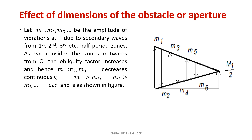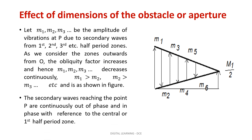Now, let us calculate the amplitude and intensity at point P due to the waves emerging from the half period zones. Let M1, M2, ... Mn be the amplitudes of the disturbances at P due to the first, second, and up to the nth half period zones. The magnitudes M1, M2, etc. are in continuously decreasing order. Since the path difference between waves reaching P from any two consecutive half period zones is λ/2, the waves from consecutive zones reach P in opposite phase. Therefore, if the amplitude due to the first zone is positive, the amplitude due to the second zone will be negative, and that due to the third zone positive, and so on.